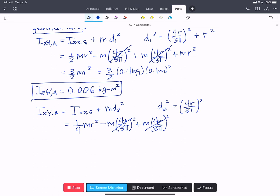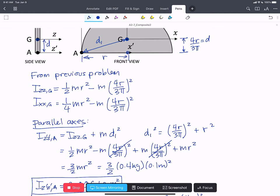Those cancel and we end up with 1/4 m r², which is just our i_xx about O. If we recall from the past problem, O was at that point.